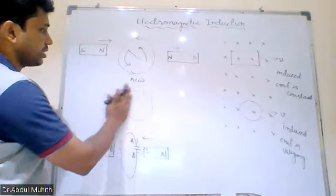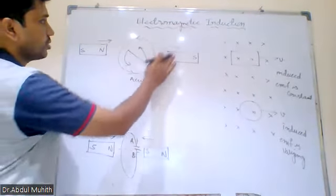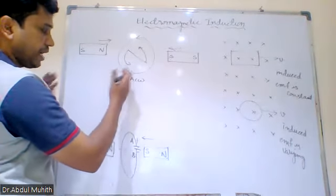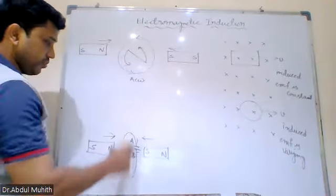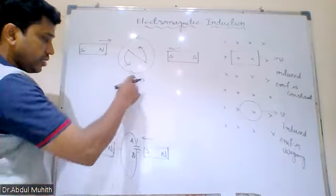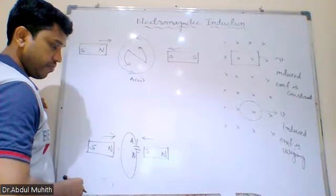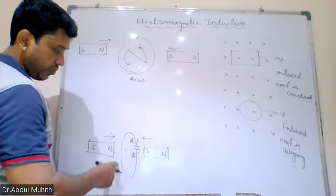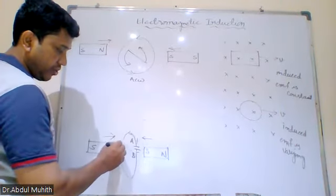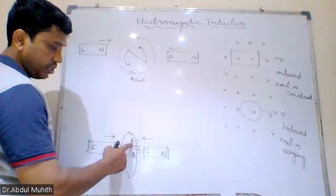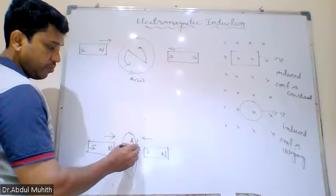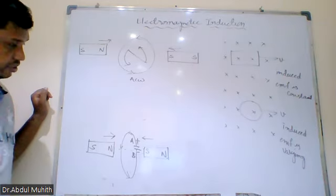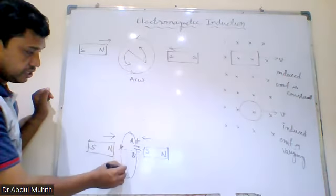When North is flowing in — the same case. So what will happen? North is on the front side and South is on the back side — same situation. Current is flowing in the anticlockwise. That is why we have given positive polarity: this plate will become positive and the down plate will become negative, because current is flowing in the anticlockwise.